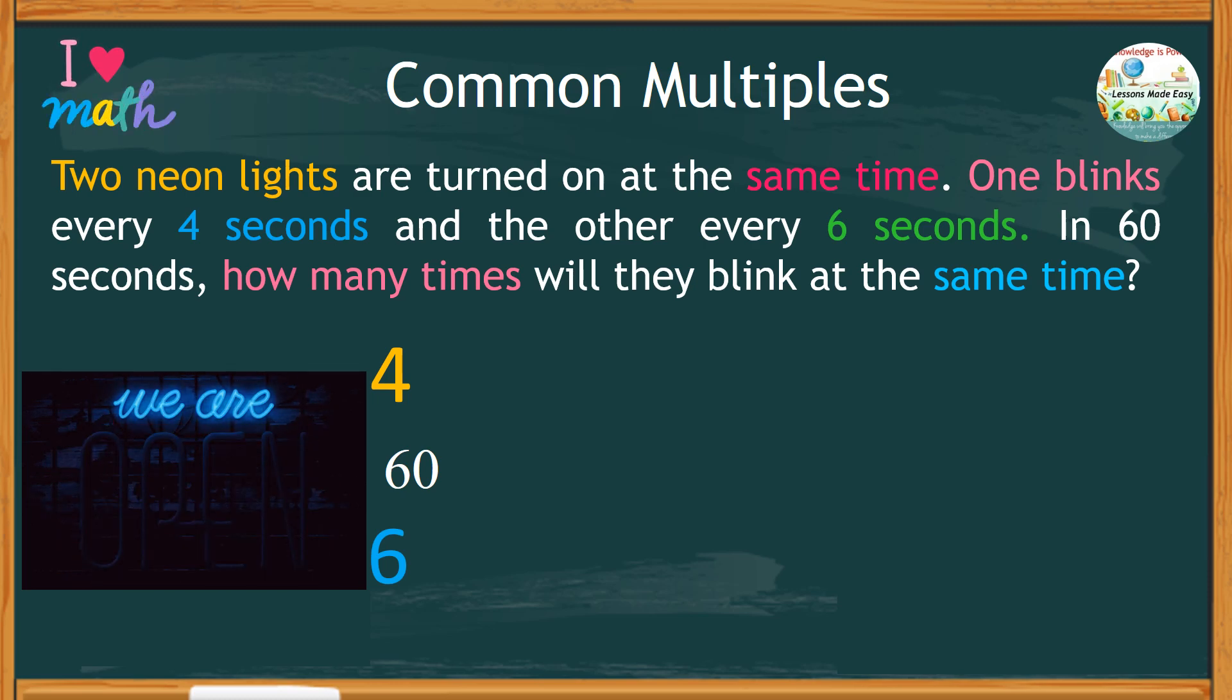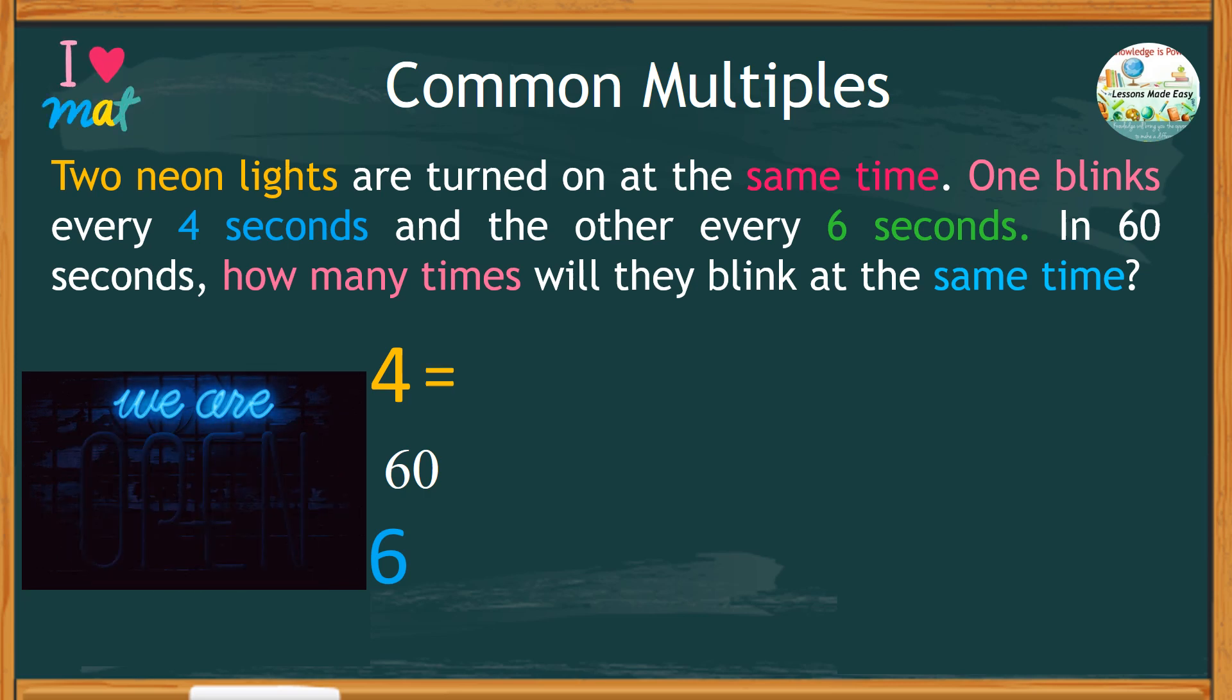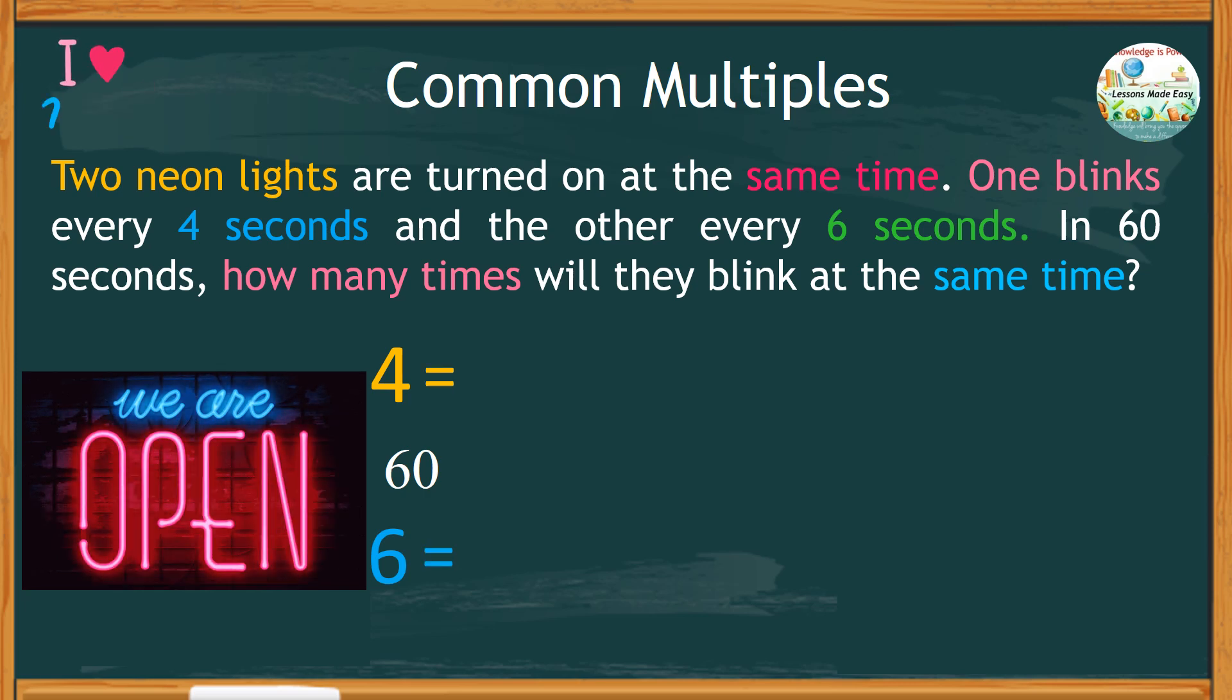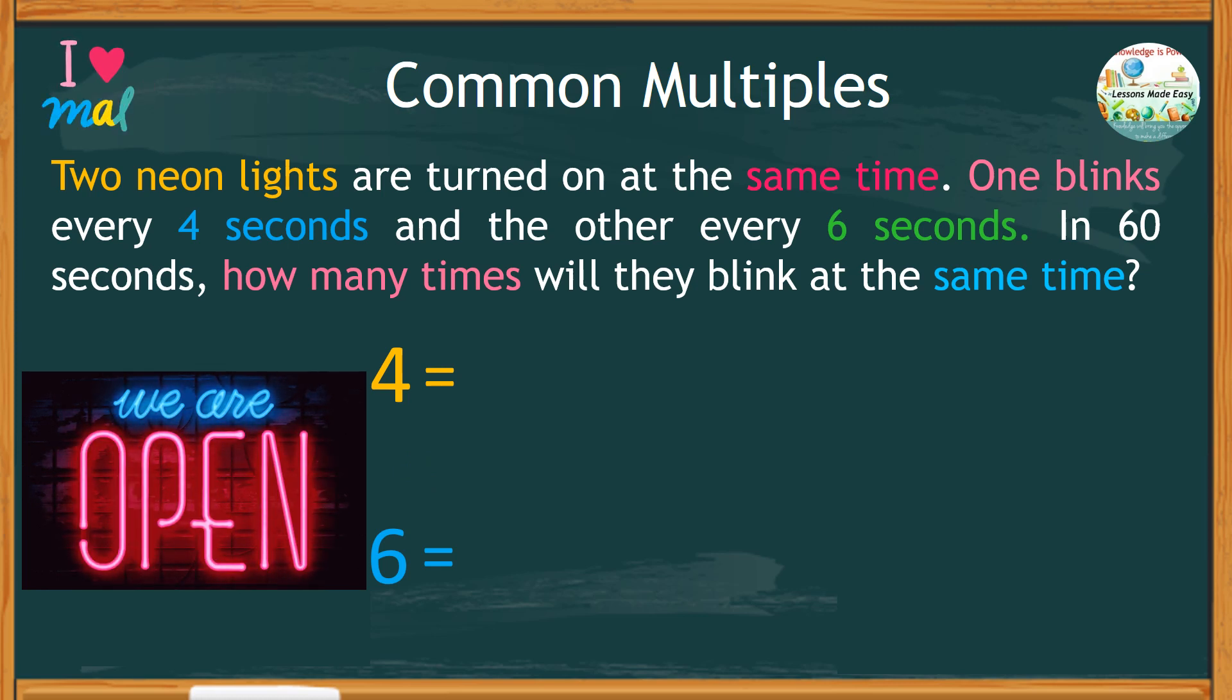This problem requires us to find the common multiples of 4 and 6 with 60 as the maximum number for both. Let's find the multiples of each number one at a time.